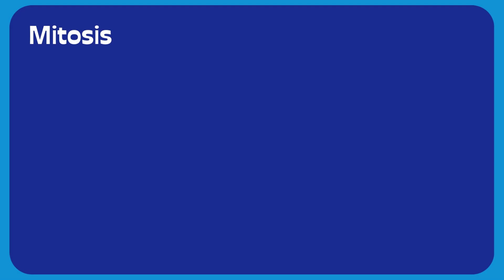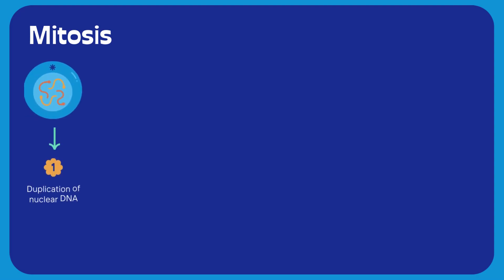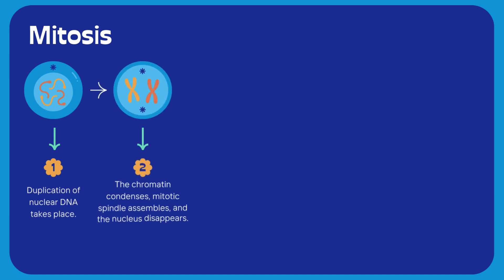Let us break down the stages of mitosis. Stage 1: duplication of nuclear DNA occurs. Stage 2: chromatin condenses, the mitotic spindle assembles, and the nucleus disappears.